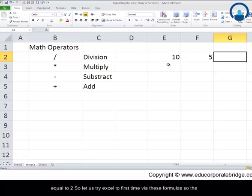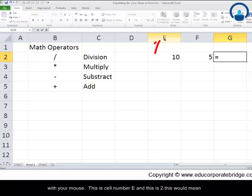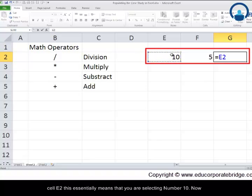So let us try to use Excel for the first time via these formulas. The way it is written is you need to type equal to first and choose the cell E2 with your mouse. This is cell number E and this is 2. This would mean cell E2. This essentially means that you are selecting number 10. Now the next step would be to find where is the division sign.